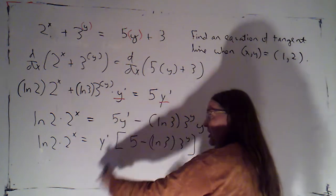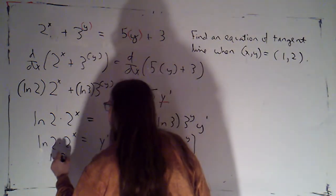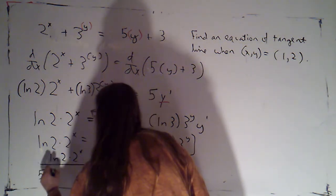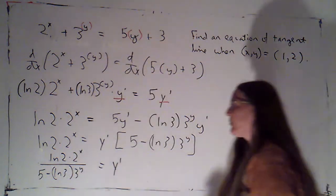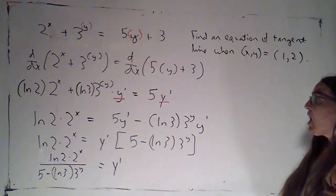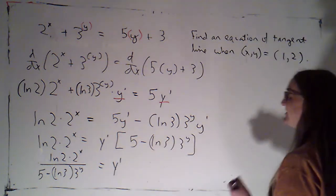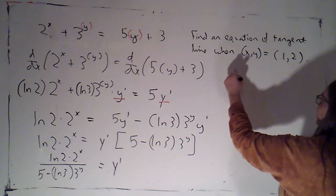As long as this isn't zero, I can divide by it and I get y prime is the natural log of 2 times 2 to the x over 5 minus natural log of 3 times 3 to the y. Okay, that's my formula for the slope of the tangent line.